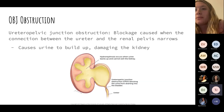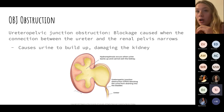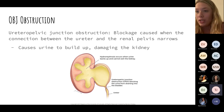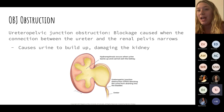UPJ obstruction — a blockage between the ureter and the renal pelvis — differs from a physical obstruction like renal calculi because it's actually an anatomical issue. It's similar in concept to a kidney stone lodged in the ureter, but instead there's a stricture causing the problem.